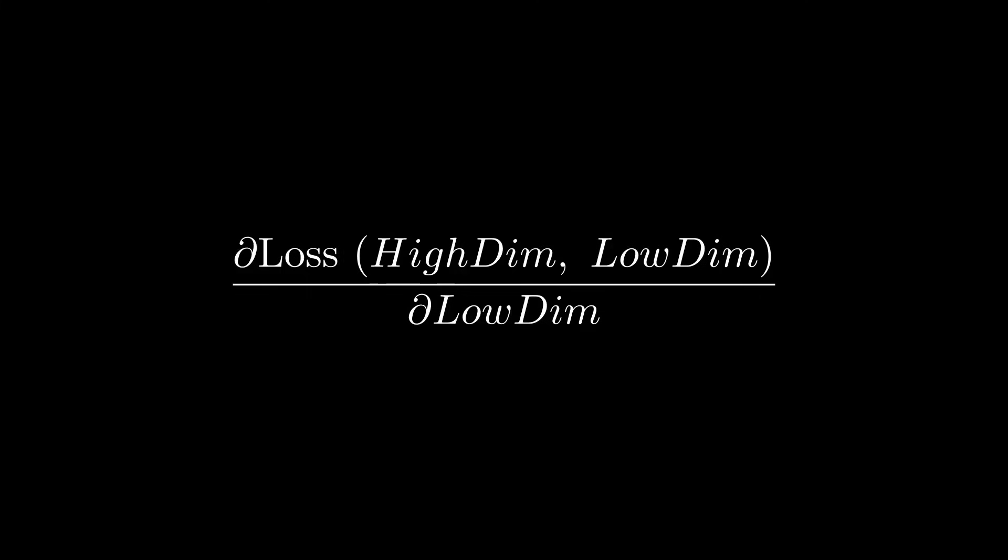We do this by using a special kind of loss function that tells us how different the distances are in the high-dimensional and low-dimensional representations. Next, we simply minimize this loss function to improve our low-dimensional representation. Let's take a look at how we actually calculate all this in practice.